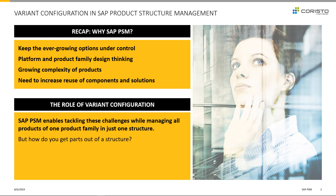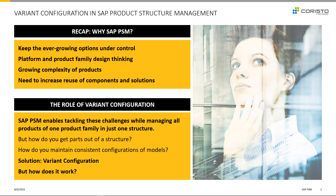But how do I get individual products out of the product structure? And how can we see consistent configurations of the product model? This is where variant configuration comes into the picture, and we want to take a look at how this works in SAP PSM.